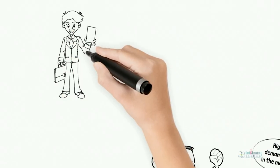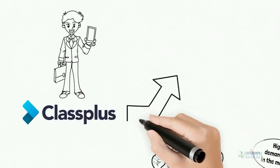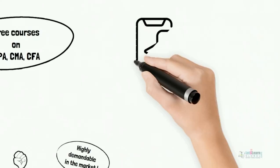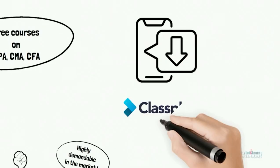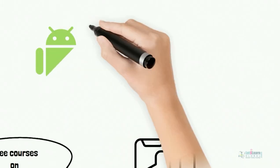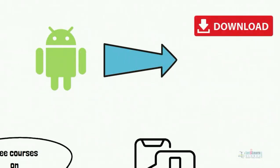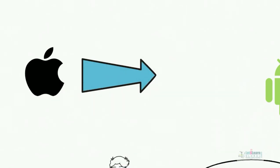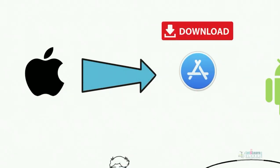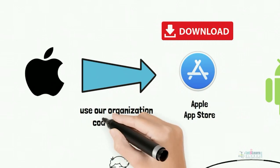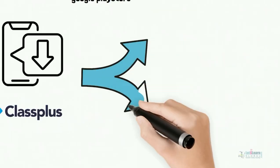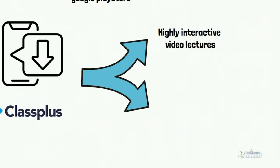Sharpen your skills with our academy app and get free courses on CPA, CMA, and CFA. To get our course, download the Classplus app. Android users can download from the Google Play Store; iOS users can download from the Apple App Store and use organization code 'Enrich' to get free courses. The course contains highly interactive video lectures with the best-in-industry features.